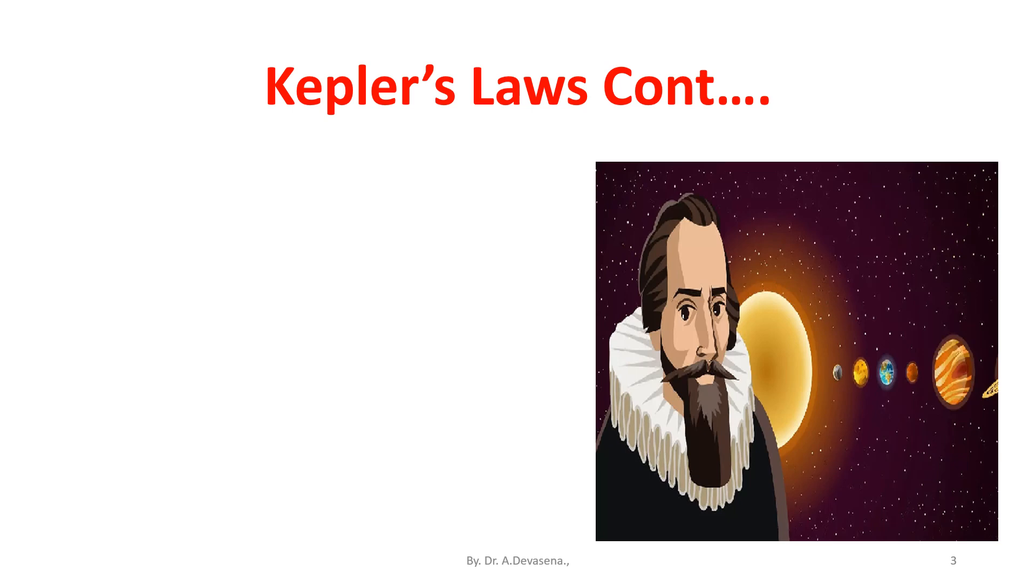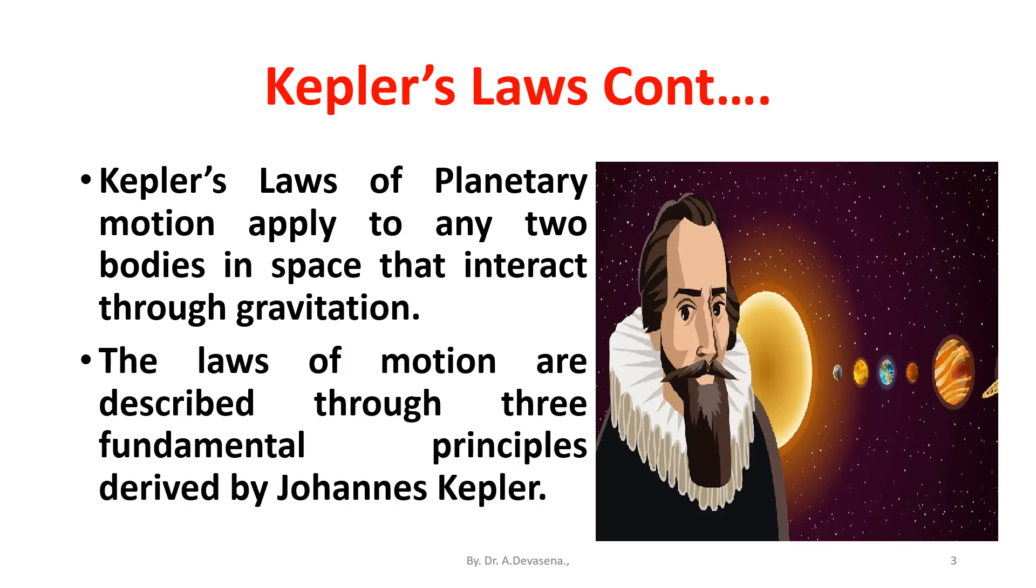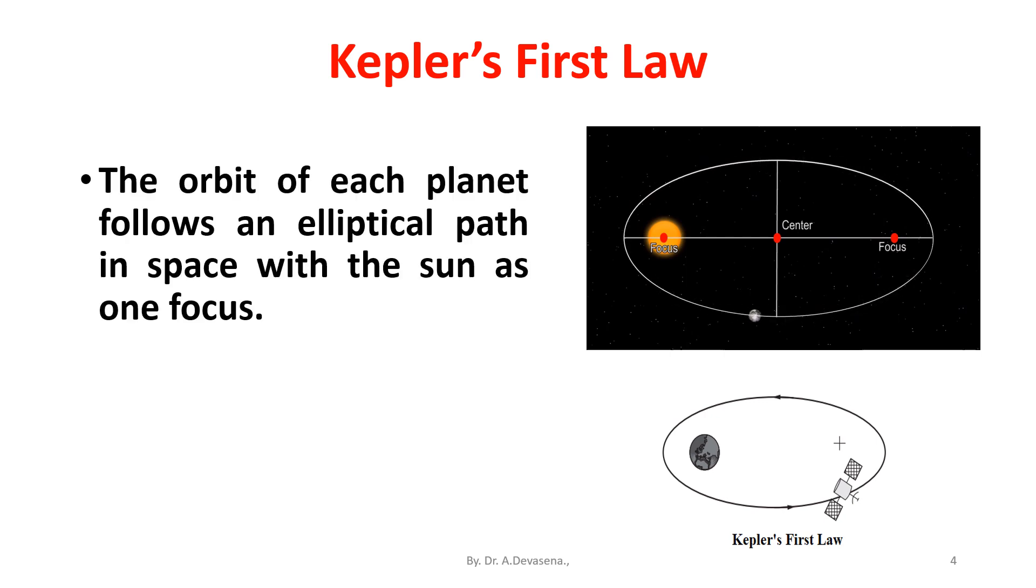Kepler's law of planetary motion applied to any two bodies in space that interact through gravitation. The law of motions are described through three fundamental principles derived by John Kepler. Kepler's first law: The orbit of each planet follows an elliptical path in space with the sun as one focus. The motion lies in the plane around the sun.